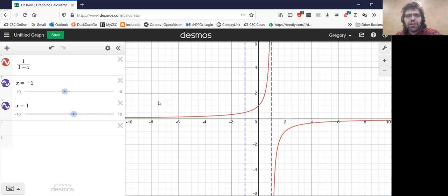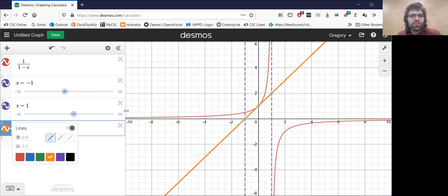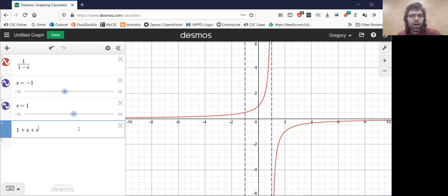Does that happen? Well, let's look at some partial sums. 1 plus x. Doesn't look very much like the curve so far, but let's keep going. 1 plus x squared, plus x cubed, plus x to the 4th, plus x to the 5th.